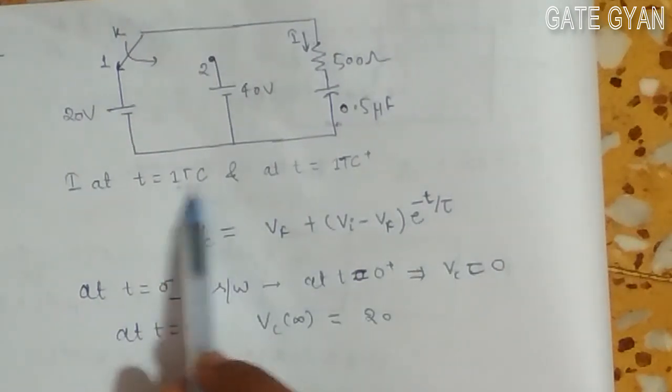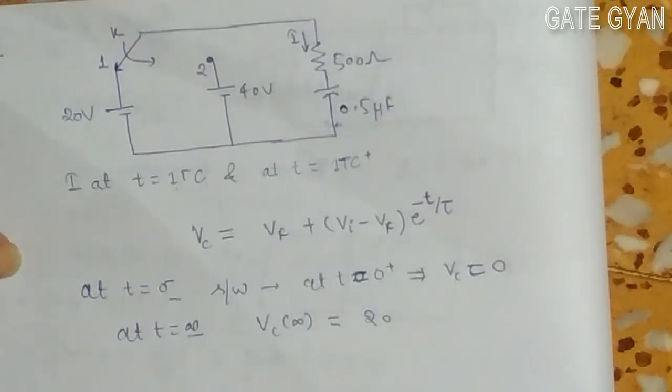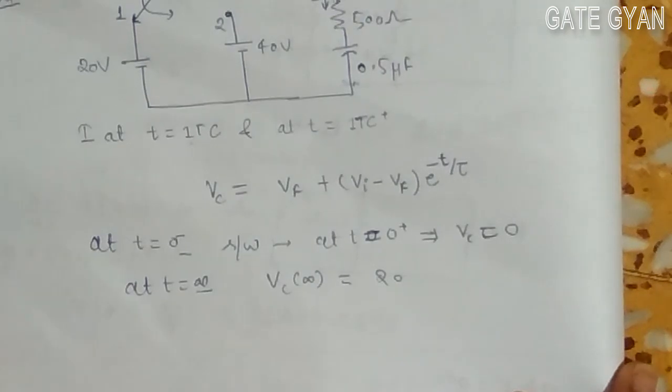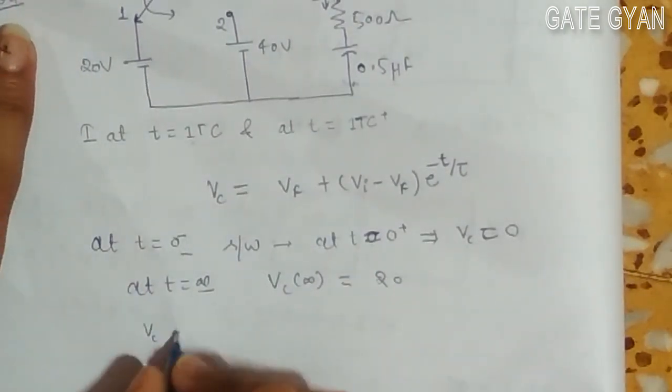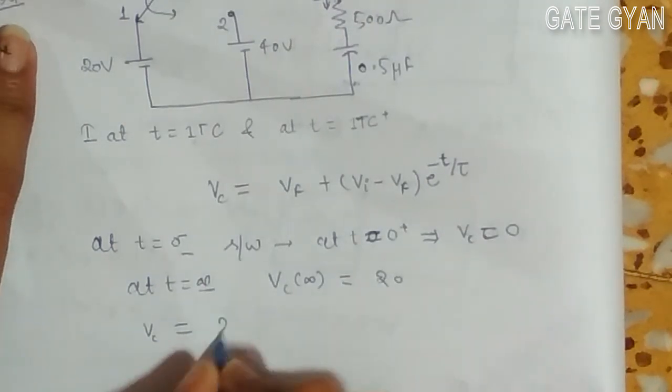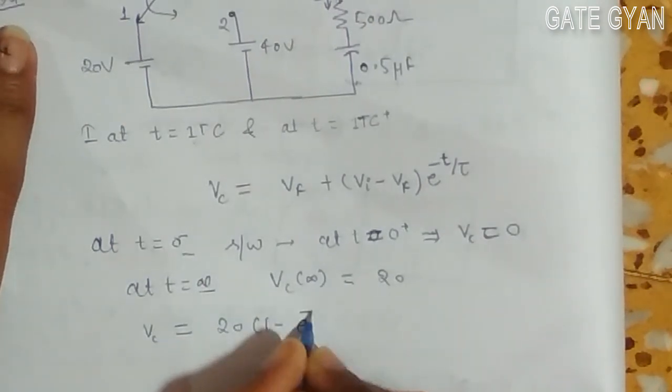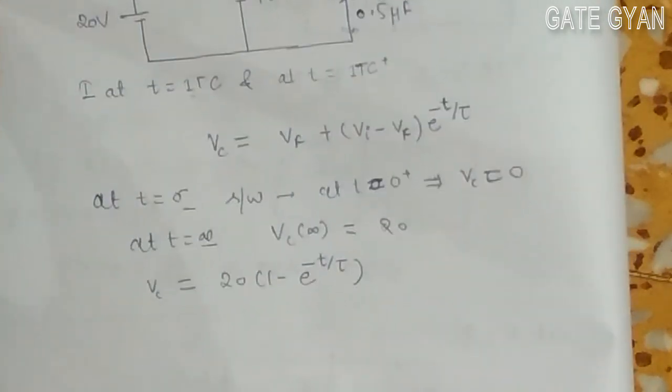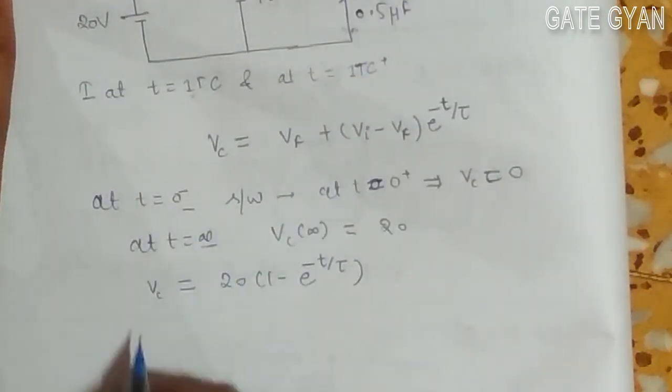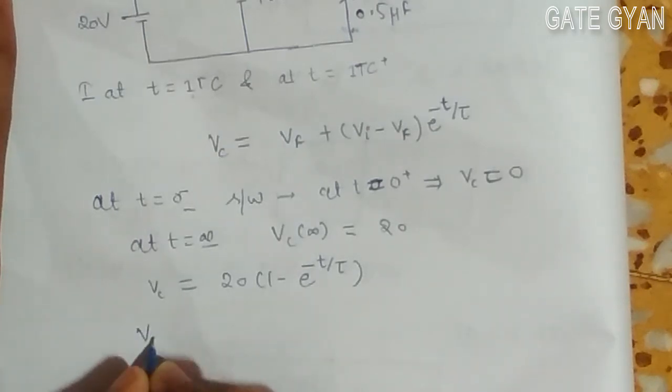Time constant will be r into c, which I am taking in terms of tau as given in the question. So my vc will become 20 times (1 minus e to the power minus t by tau).